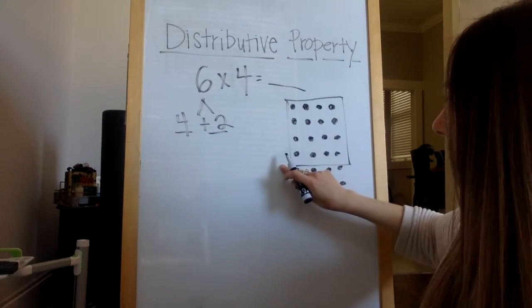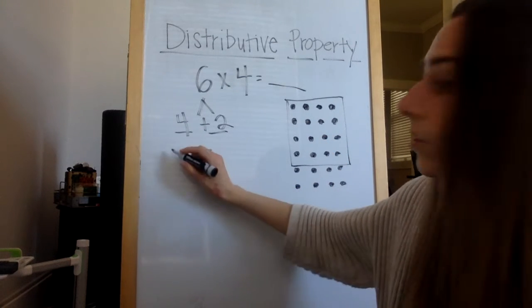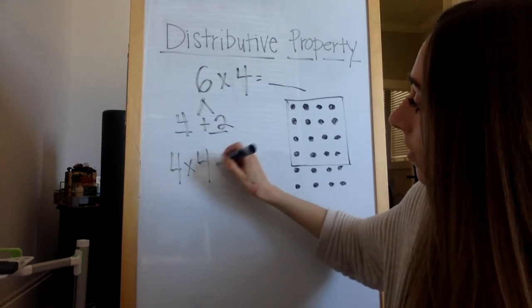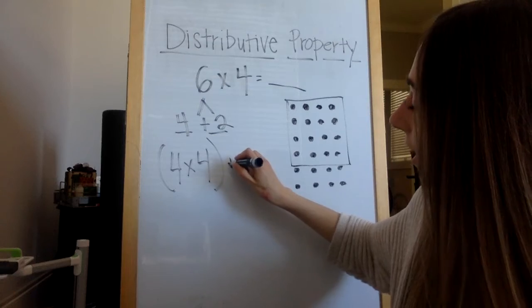So what is that? I have one, two, three, four. Four rows of four. I like putting in parentheses to separate it.